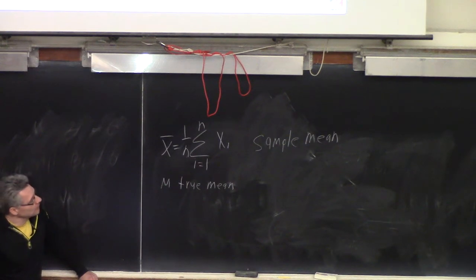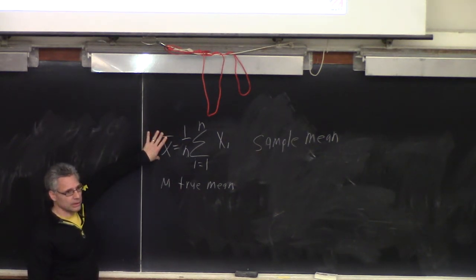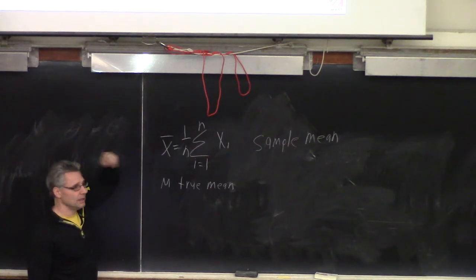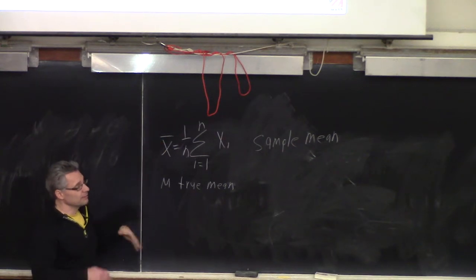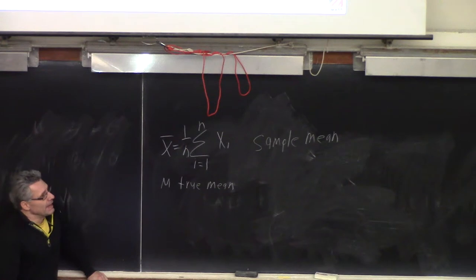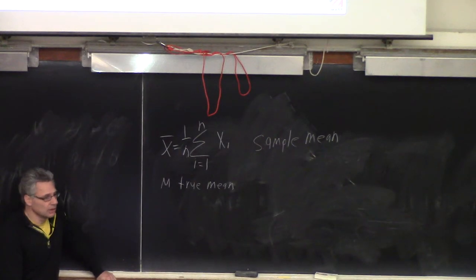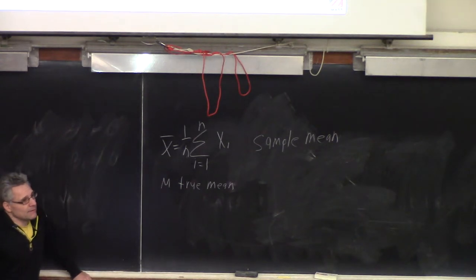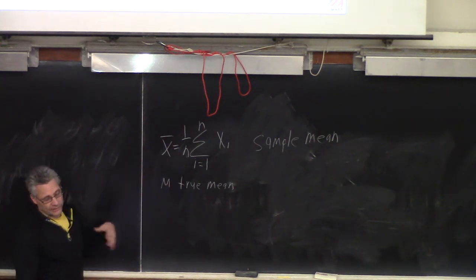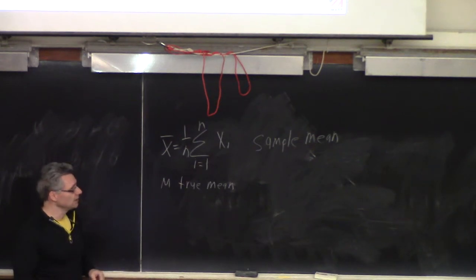We can ask the question: how confident are we about this estimate? The more samples we have, the more confident we'll be. We can specify what confidence level we want — for example, we want to be 95% confident that the mean is between this value and this value, and then we calculate what that range is. That range is called the confidence interval. If you ask for 100% confidence, the range is minus infinity to infinity. For 95% or 90%, I'll teach you today how to calculate the range. The confidence limits shrink as we have more samples.